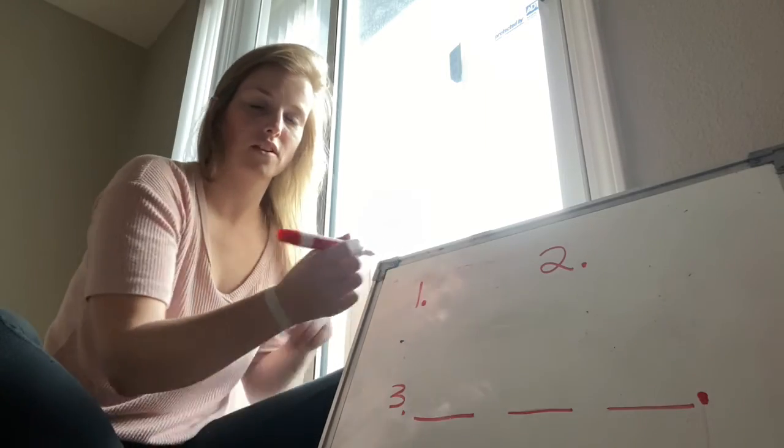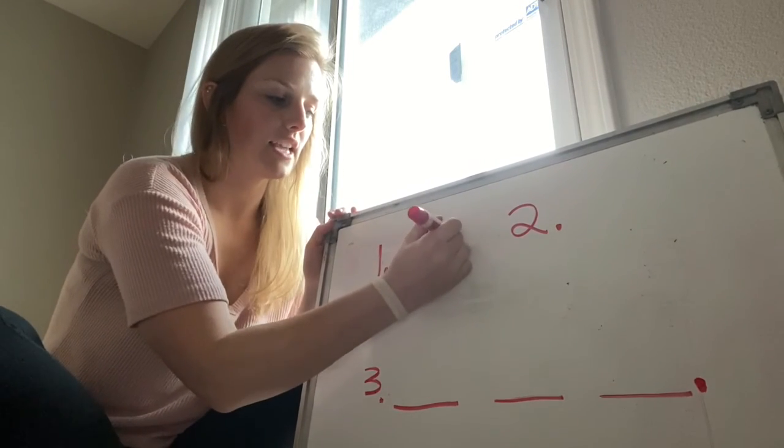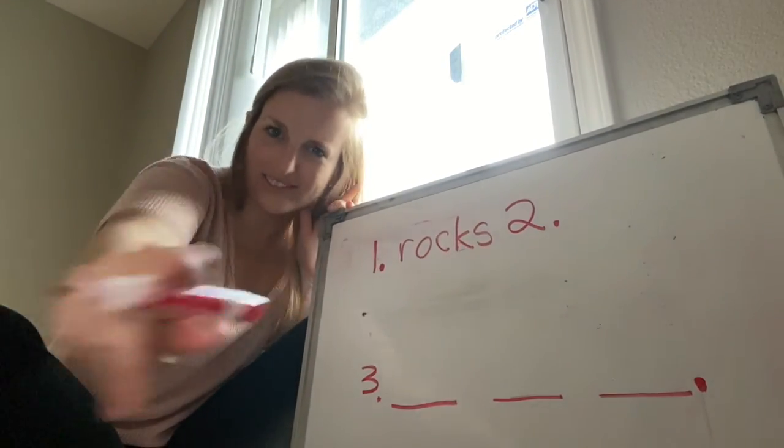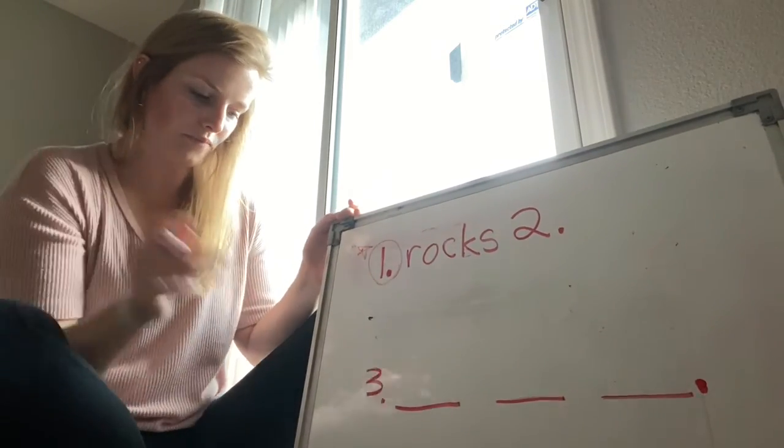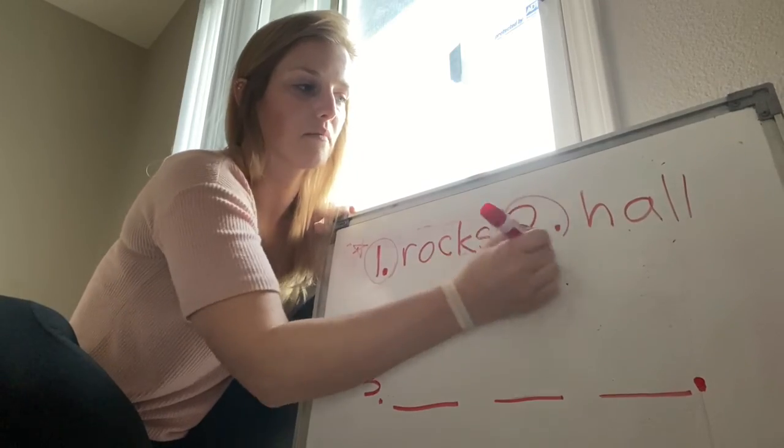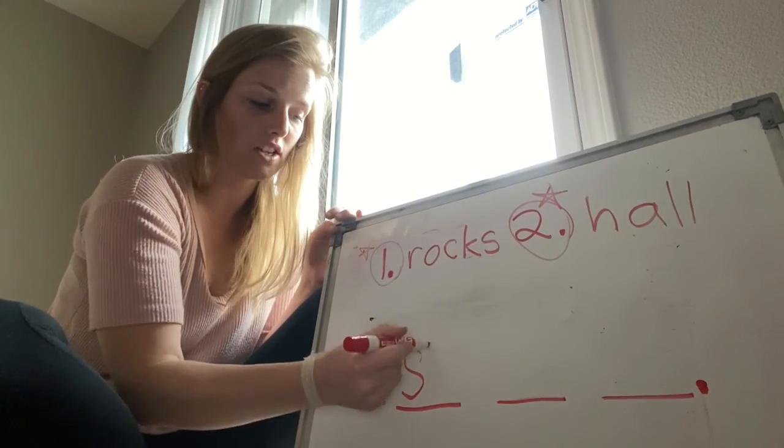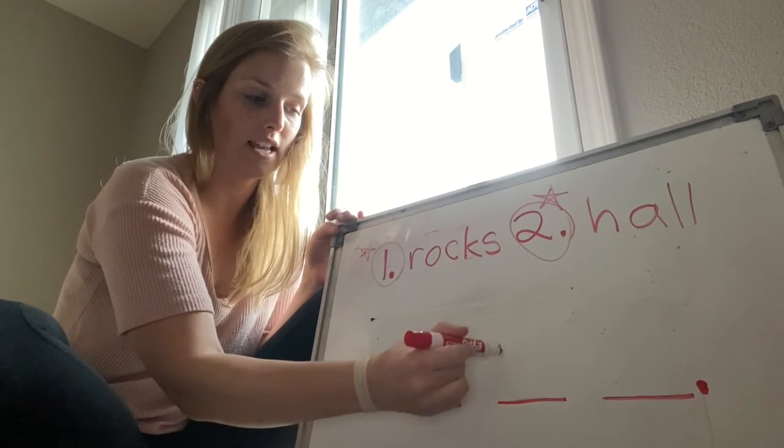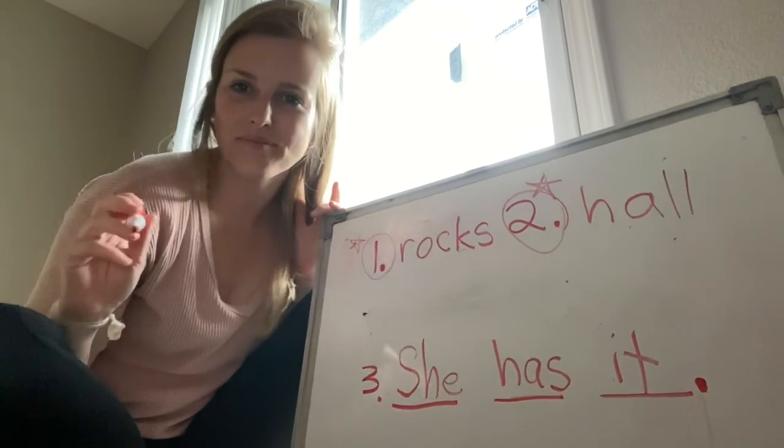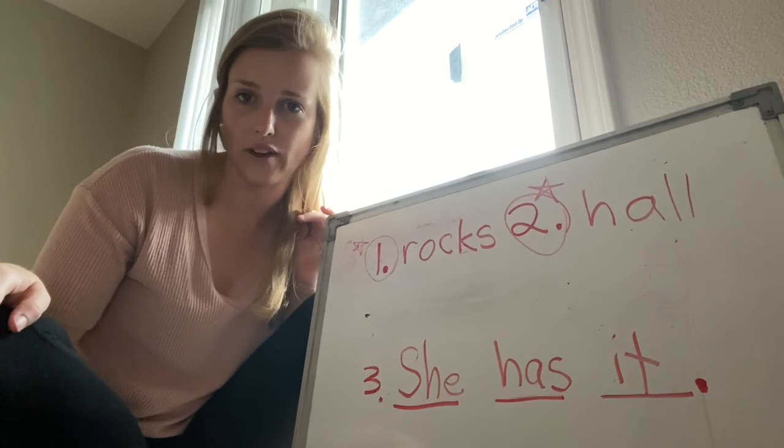Okay. Let's check our words. Ready? Rocks. R-O-C-K-S. At the end of the word, it's CK. Rocks. Rocks. Guess who rocks. You do. Number two. Got that right. Hall. H-A-L-L. Number two. Hall. And number three. The sentence. She. Capital because it's the beginning of a sentence. S-H digraph. She. Space. Has. She has. It. She has it. You have it. Good job. I will see you again tomorrow for more of our SIPS lessons. And remember that this is going to help any of you to be better readers and writers. Bye.